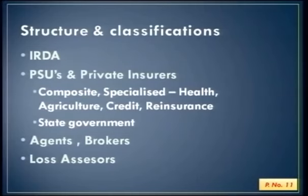In terms of other structure, we have agents — individual agents who have existed for a long time. Soon after IRDA came into being, corporate agents were introduced in the form of companies starting their own agencies, along with bancassurance, so banks also act as corporate agents. For the first time, insurance brokers were introduced — independent organizations and companies who can act as intermediaries between the insurance company and the public who wants insurance. The other intermediaries are surveyors and loss assessors who investigate losses in general insurance.